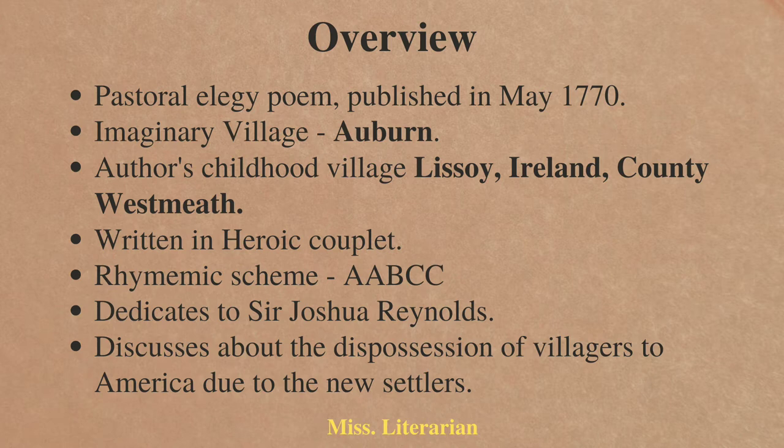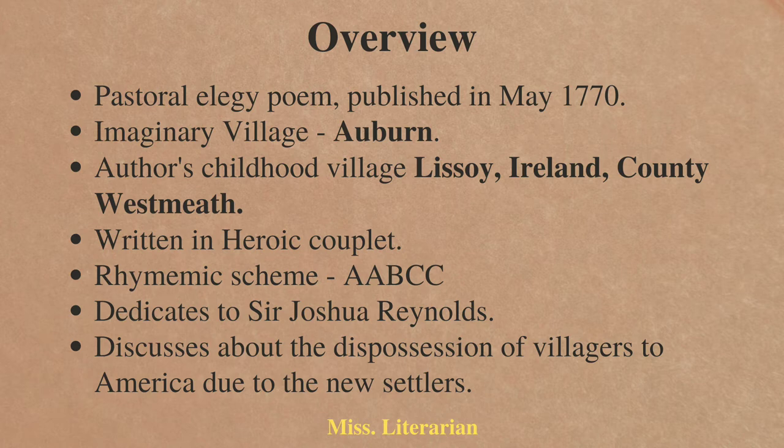This poem is written in heroic couplet with a rhyming scheme of AABBCC. Oliver Goldsmith dedicates this poem to the artist Sir Joshua Reynolds. This poem talks about the dispossession of villagers to America by giving up their farmlands to the rich people.